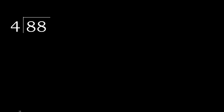88 divided by 4. 8 is not less, therefore with 8: 4 multiplied by which number is nearest to 8 but not greater? 4 multiplied by 3 is 12 — 12 is greater. 4 multiplied by 2 is 8, which is not greater. So 8 minus 8 is 0.